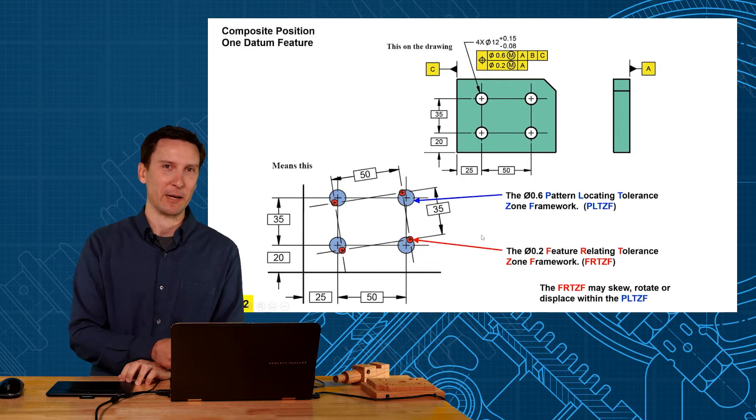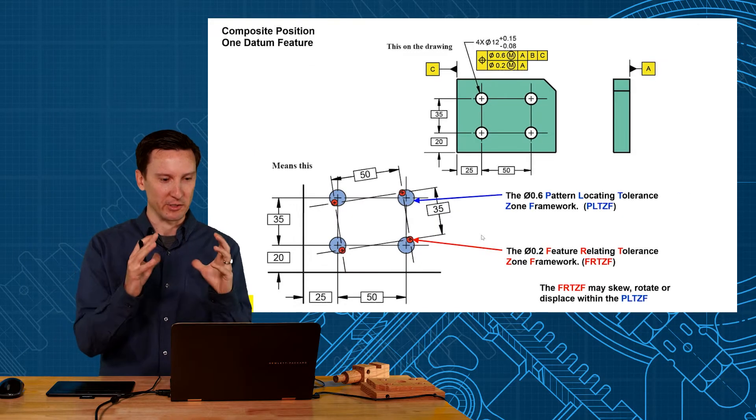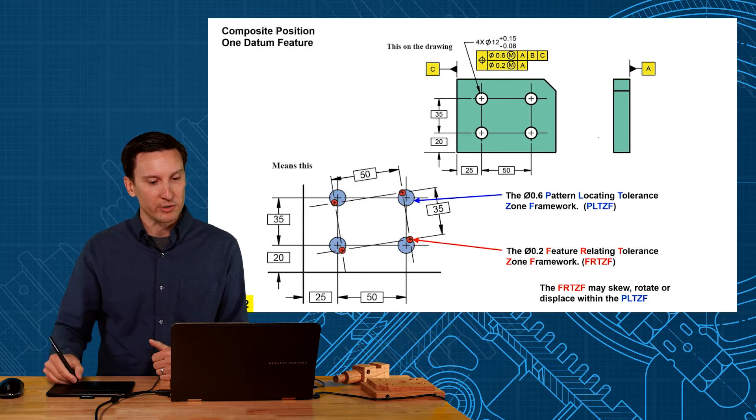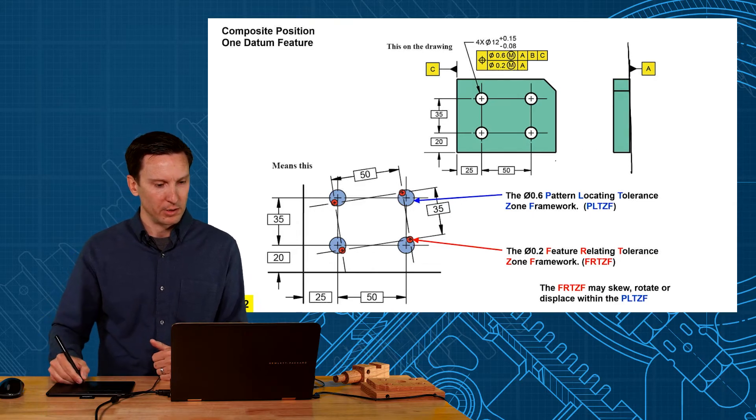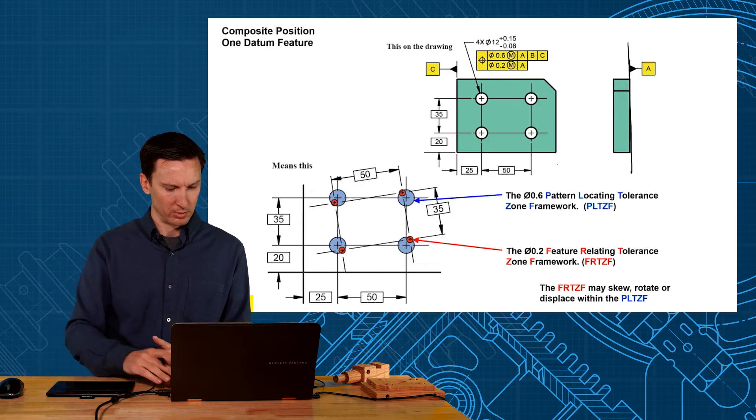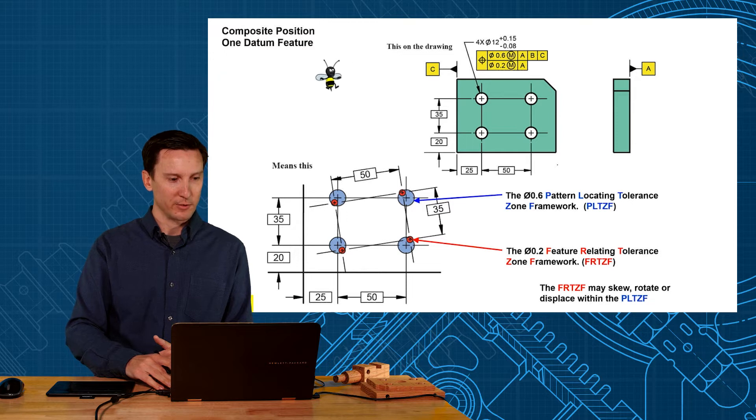Let's look at the most common example of composite position to try to bring this home here. I've got some pretty simple datums on this part. Back face is A and B. Oh, where's B on this part? Oh, did I leave B off? Oh, there's B.